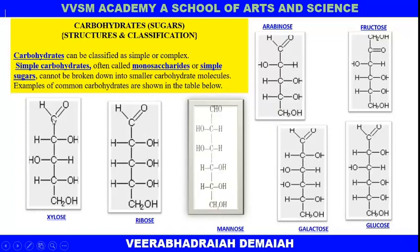Xylose is also a pentose. Pentoses and hexoses are the important simple sugars in the classification of carbohydrates. These are the structures, and many isomers exist within these structures. We will discuss isomerism in the next coming classes.